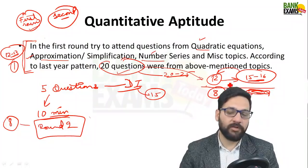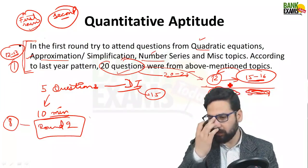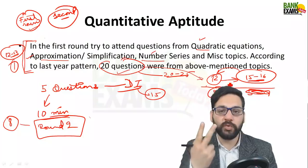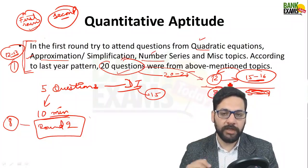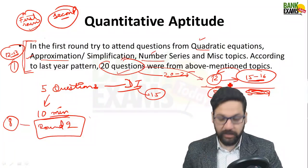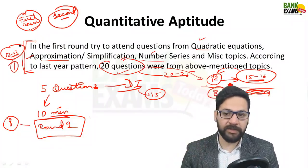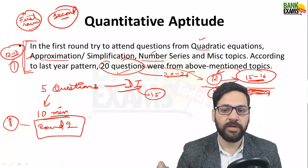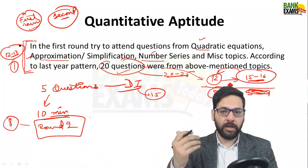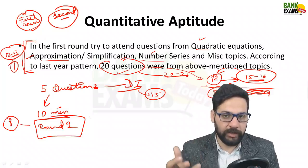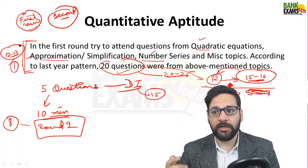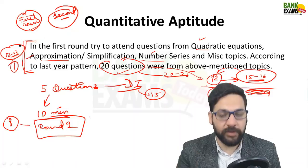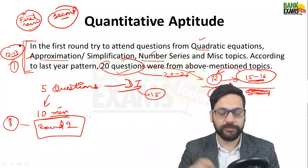Divide the quantitative aptitude, reasoning, and even the English section into two rounds. Attempt your paper in rounds — round one covers the simple chapters like quadratic equations, approximation, number series, time and work, time and distance; round two covers data interpretation and the topics you find difficult.